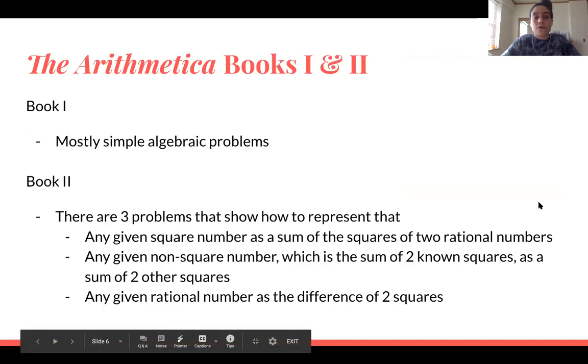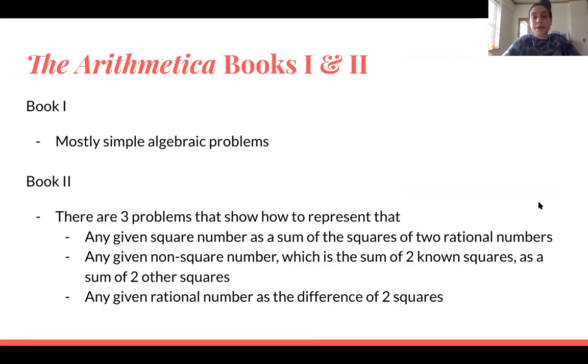Okay, so for book one of the Arithmetica is basically simple algebraic problems, and then book two also simple algebraic problems, and then just three problems that were in book two show how to represent any given square number as a sum of the squares of two rational numbers, any given non-square number, which is the sum of two known squares, as a sum of two other squares, and then any given rational number as the difference of two squares.